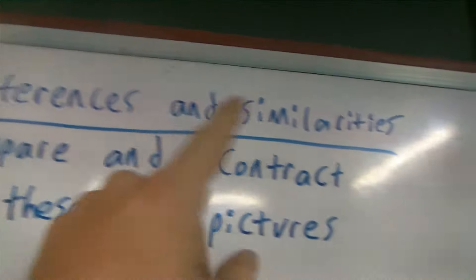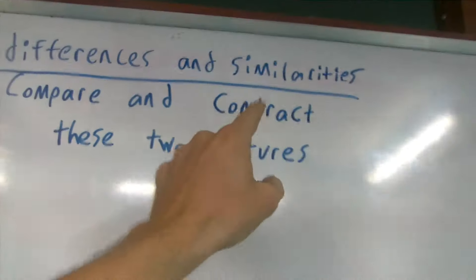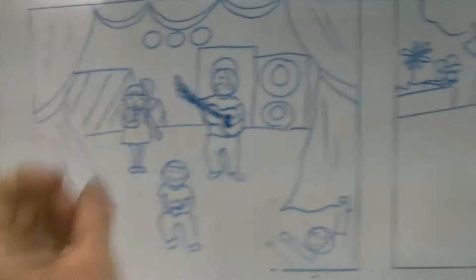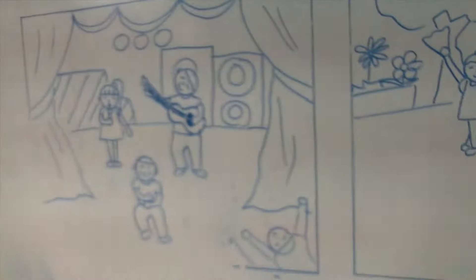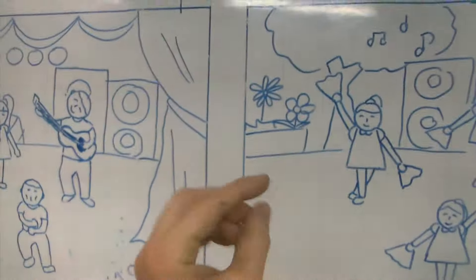Now for the second part, it's about the similarities. And with the similarities, you talk about the same things, the things that the two pictures have in common. For example, there is a girl here and a girl here. That's the same.